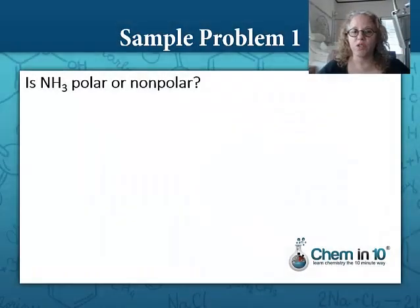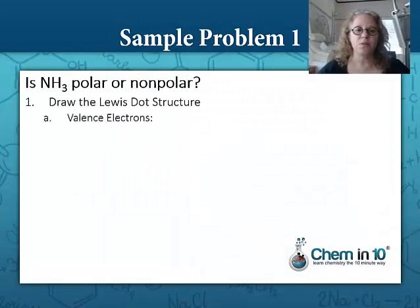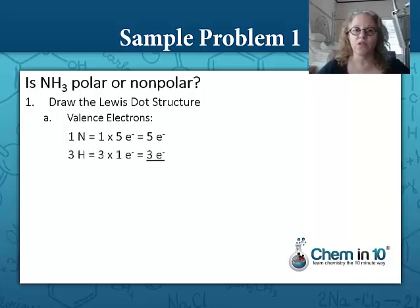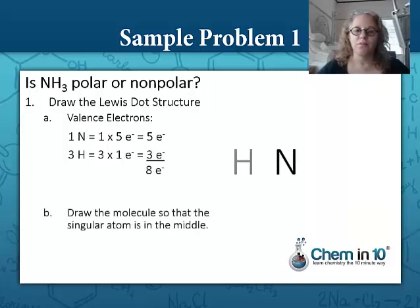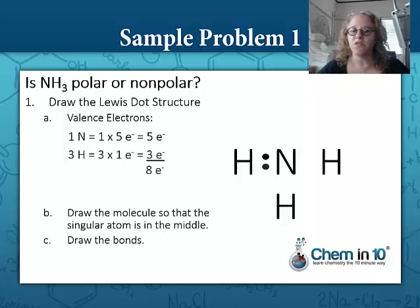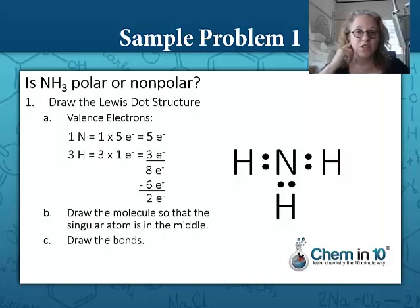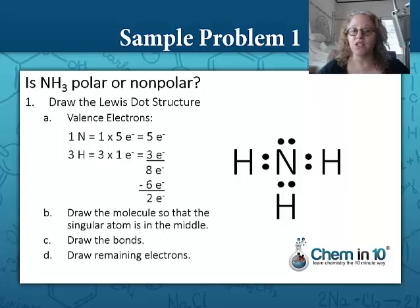First, let's draw the Lewis dot structure of ammonia. To do that, we determine the number of valence electrons. Nitrogen has five valence electrons, and each hydrogen has one valence electron for a total of three electrons, so overall ammonia has eight electrons. We draw ammonia with the singular atom in the middle — nitrogen flanked by three hydrogens. Next we draw the bonds; each bond consists of two electrons. We've now used six of the eight electrons, leaving two. All the hydrogens already have full outer shells, and nitrogen needs two more electrons, so those two electrons go right on top of the nitrogen so that nitrogen has a full outer shell.